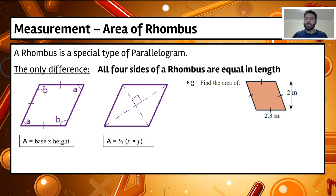Find the area of this rhombus. So the area equals base times height. So the area equals the base, 2.3 multiplied by the height 2 in meters. So the area equals 4.6 meters squared.